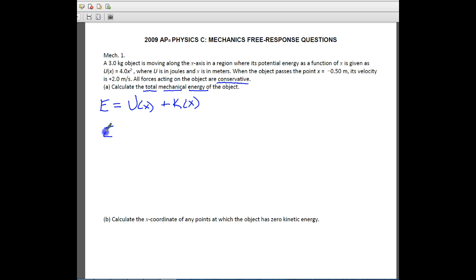For this, we're going to say E is equal to, and then we're going to put in 4.0x squared, because that's what they said U was, plus 1 half m v squared. And the reason that we do that is because we're looking at it in terms of its position. So we're looking at it when it's at the point negative 0.5, and we're looking at it when we have a speed of 2 meters per second there at that position.